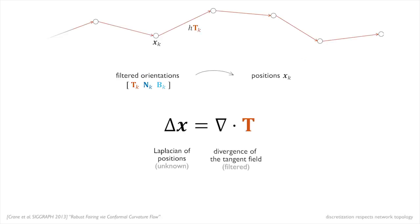This naturally resolves the issue that the filtered tangent field might not be integrable. Our discretization of the Poisson equation produces a well-connected network by design.